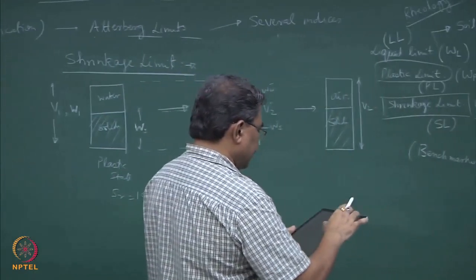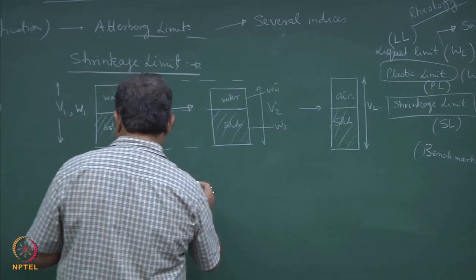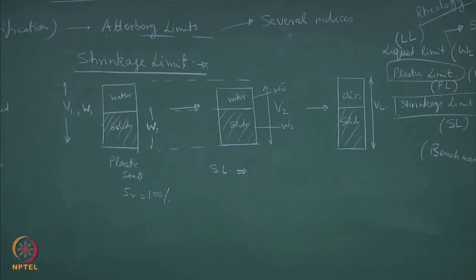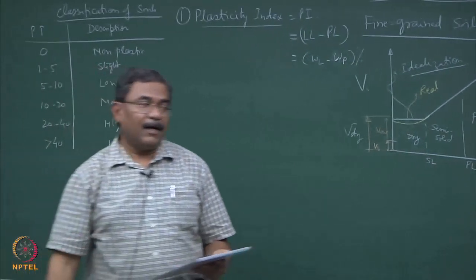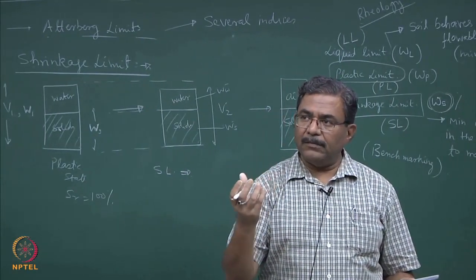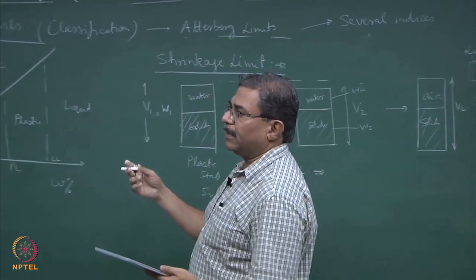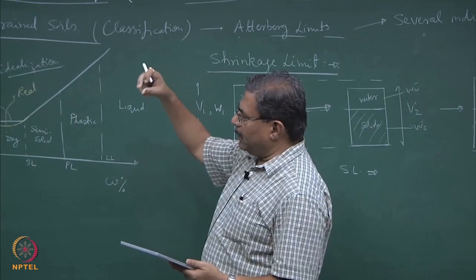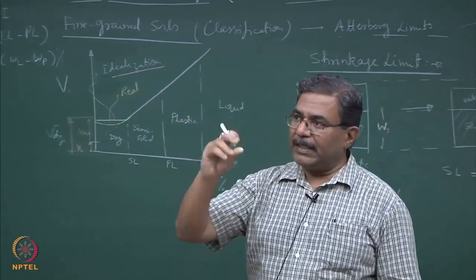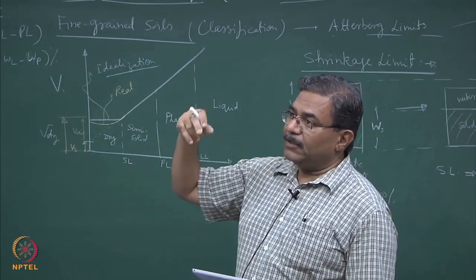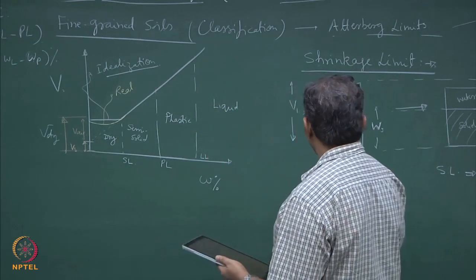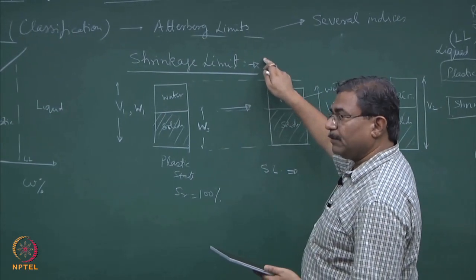If I further dry it, this phase system will get converted to solids and air — the volume remains constant as V_2. This is what we define as V_dry. Now if you solve this three-phase system and define the shrinkage limit as SL, there are two philosophies: one is weight-wise, another one is volume-wise. In your laboratory, they will ask you to use the mercury column — what is known as mercury displacement. You dry the soil mass, put the dried portion in the mercury dashpot, and whatever volume of mercury oozes out — measure it, that is equal to the volume of the soil. Then put this pad into the oven and find out its moisture content.